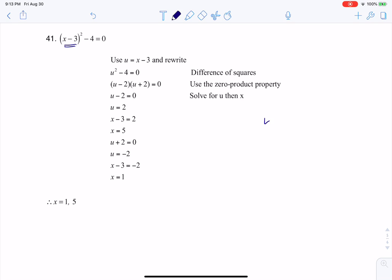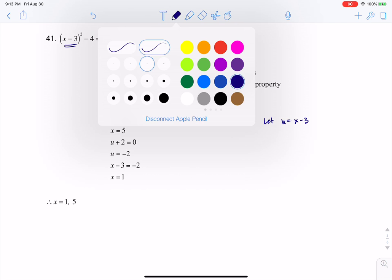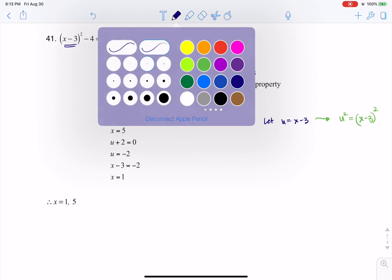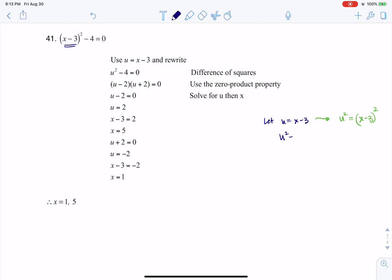And the deal is, if you let your u equal x minus 3, what you always want to do next is see what the squared term turns into. So what I mean by that is if I have u equaling x minus 3, and I square both sides, I will quite literally wind up with u squared is equal to x minus 3 squared.